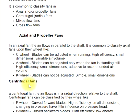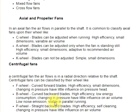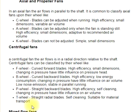In a centrifugal fan, the air flows in a radial direction relative to the shaft. Centrifugal fans are classified by wheel type. The F wheel has curved forward blades with high efficiency, small dimensions, and changes in pressure have little influence on pressure head. The B wheel with curved backward blades offers high efficiency, low energy consumption, low noise emission, and is stable in parallel running. The B wheel with straight backward blades is high efficiency and self-cleaning. The T wheel with straight radial blades is self-cleaning and suitable for material transport.